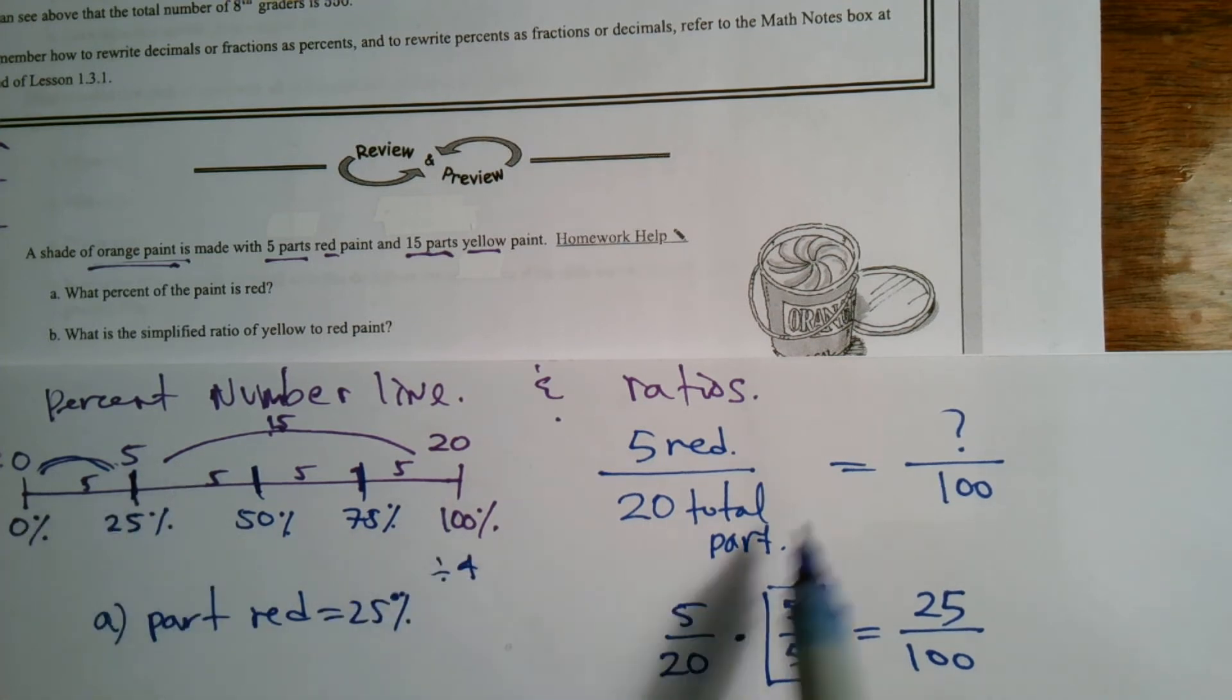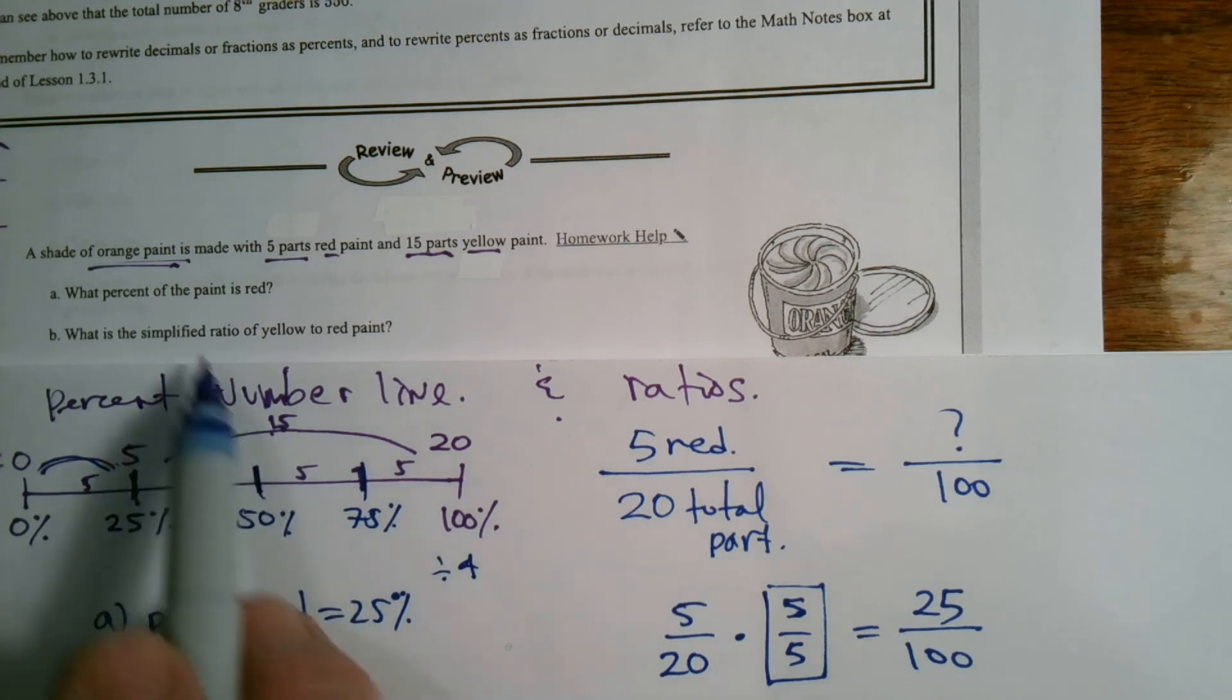So I end up as well using ratios, twenty five percent. So either way you look at it, percent number line or using ratios, twenty five percent is the answer for parts red.